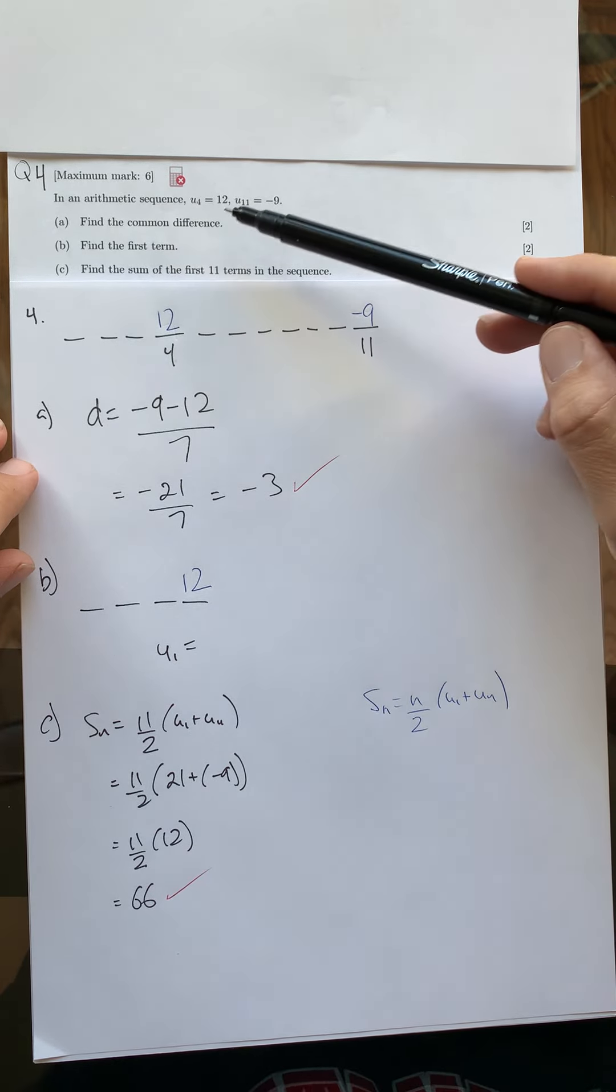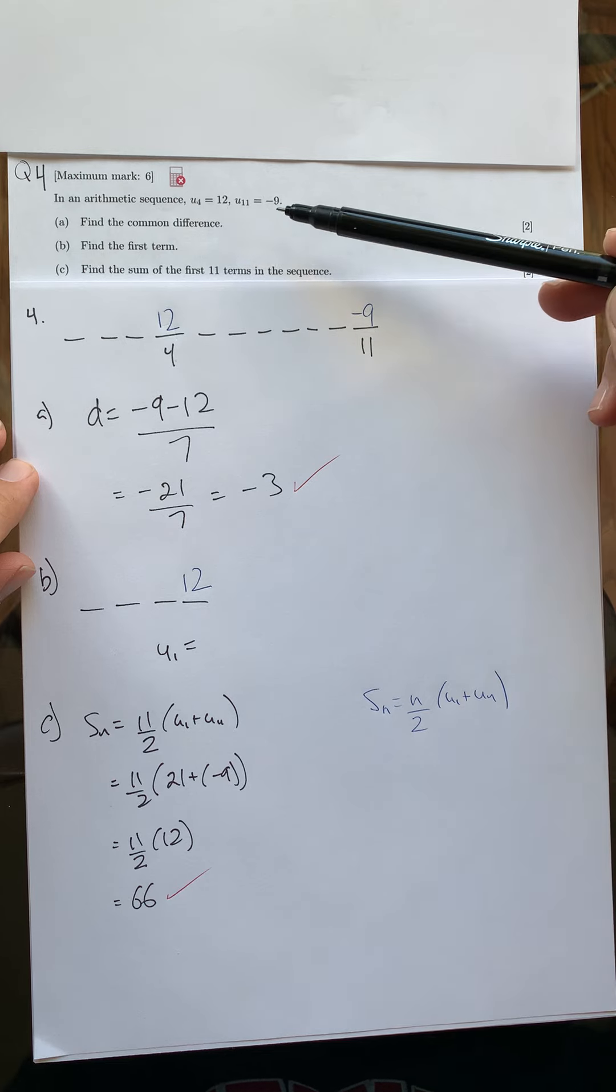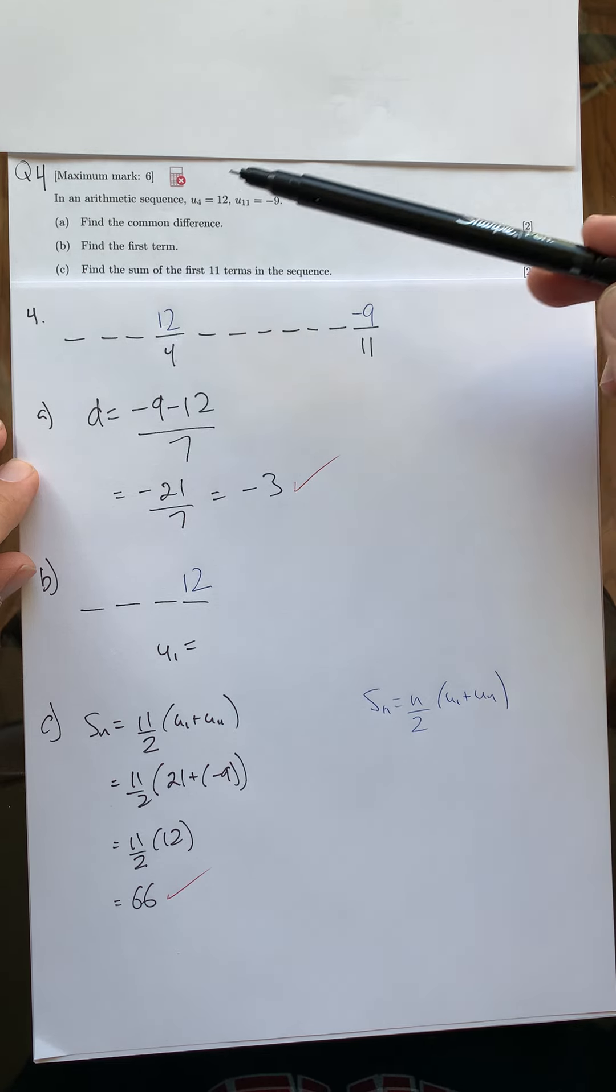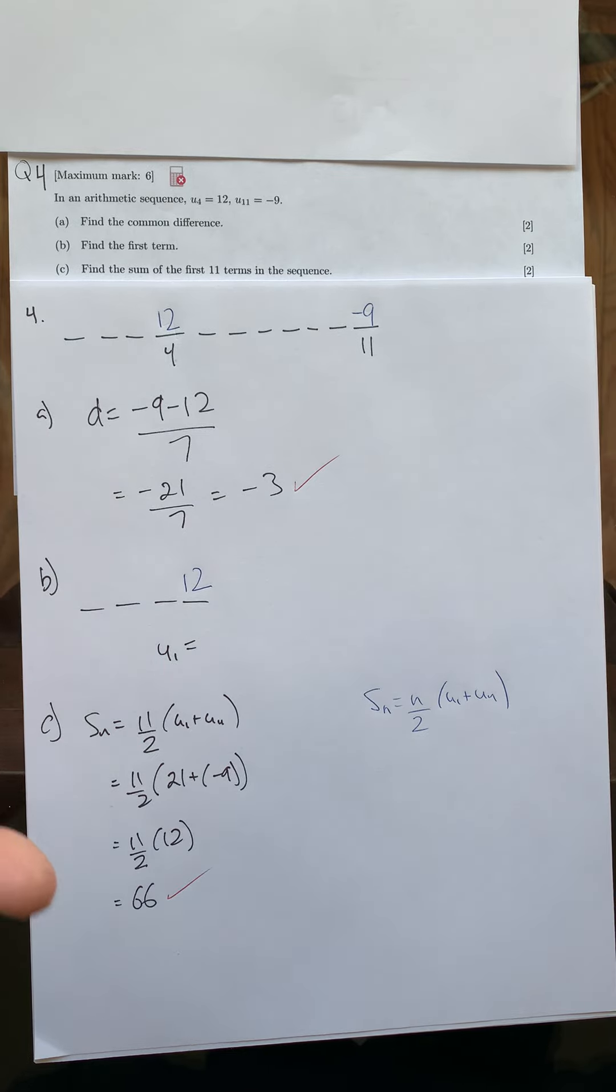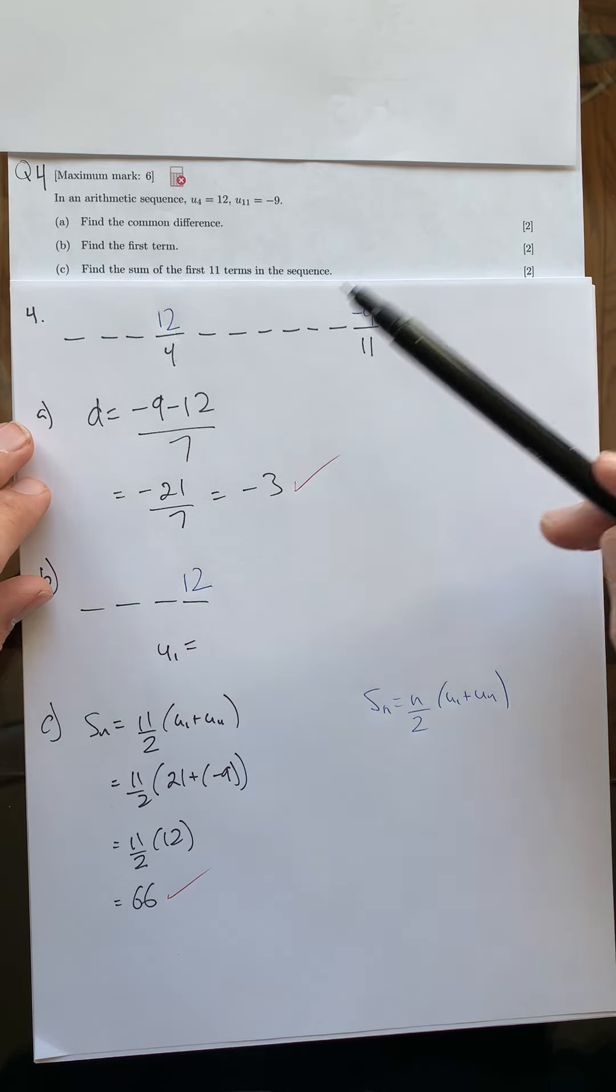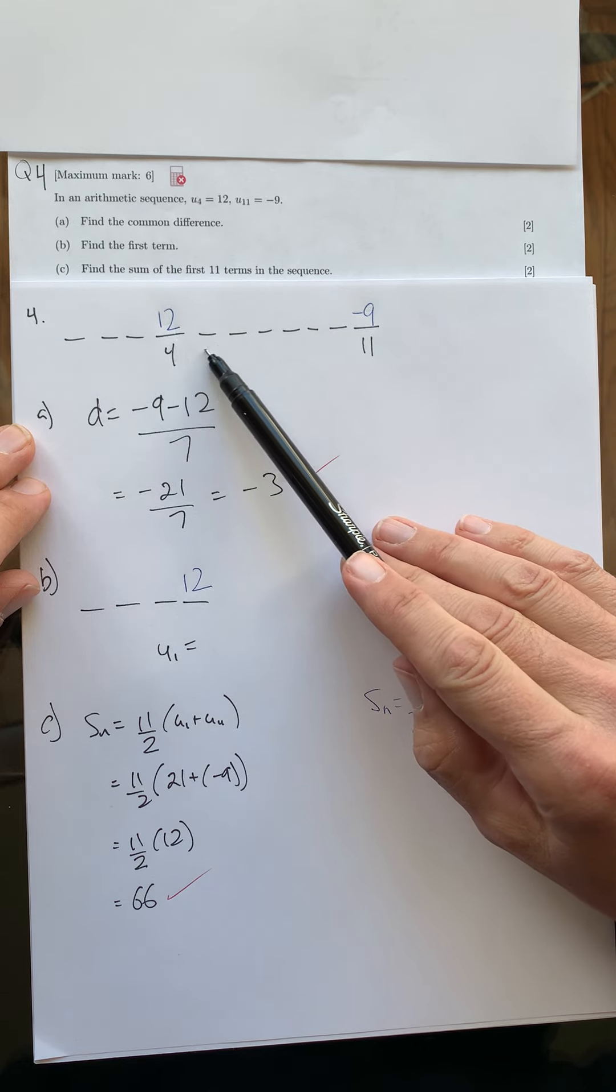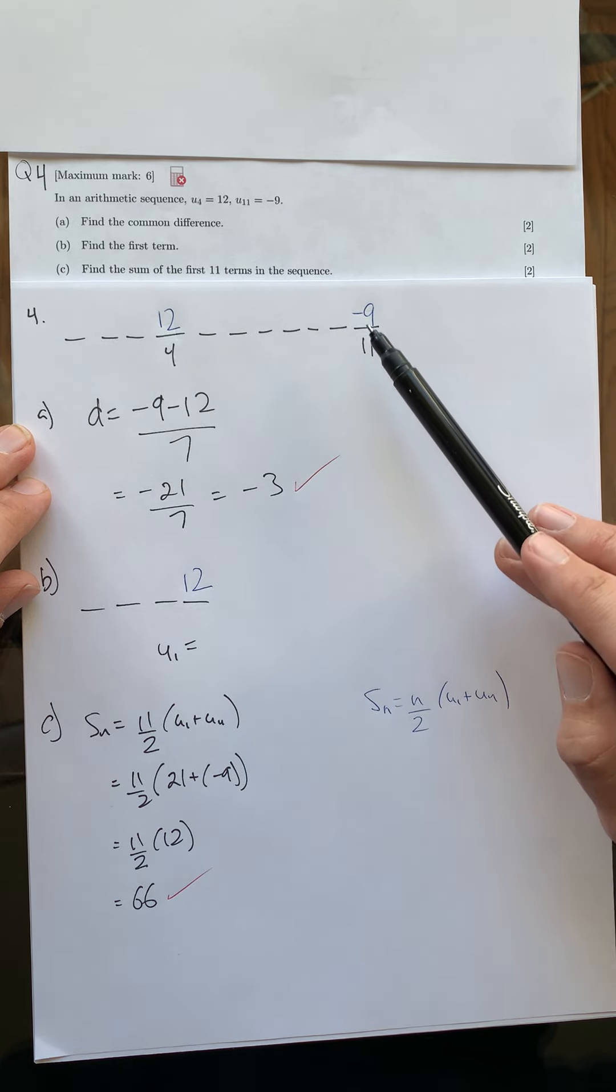So here in an arithmetic sequence, u₄ is 12 and u₁₁ is negative 9, and they're asking us to find a few things. For this one, I want to show you that we don't always have to use a formula. If I work this out, the fourth term down is 12 and the 11th term down is negative 9.